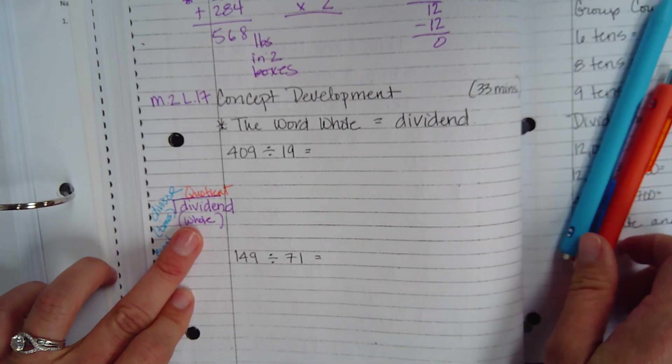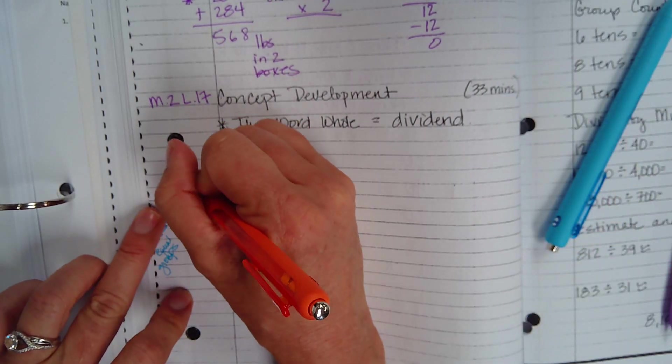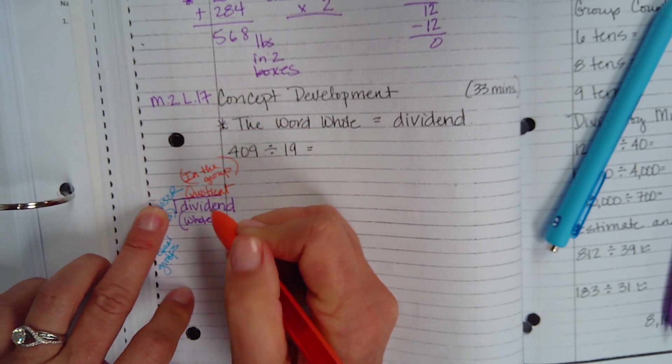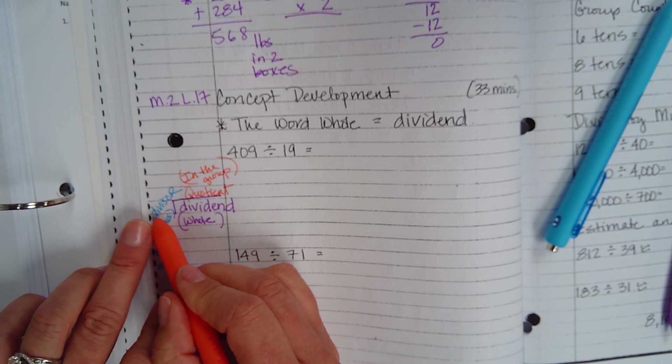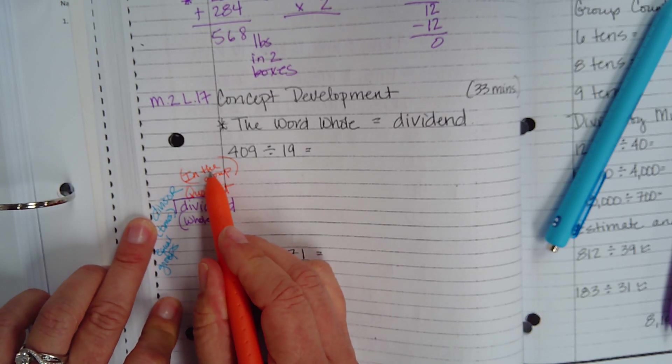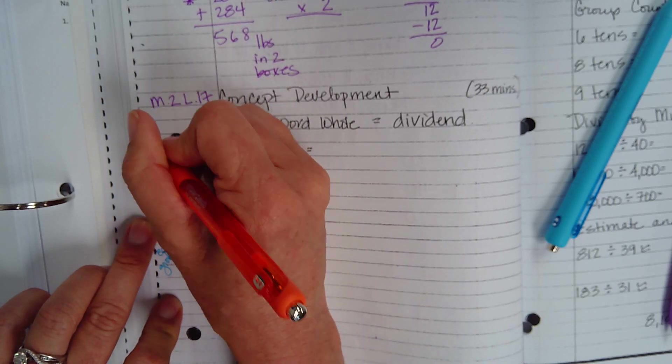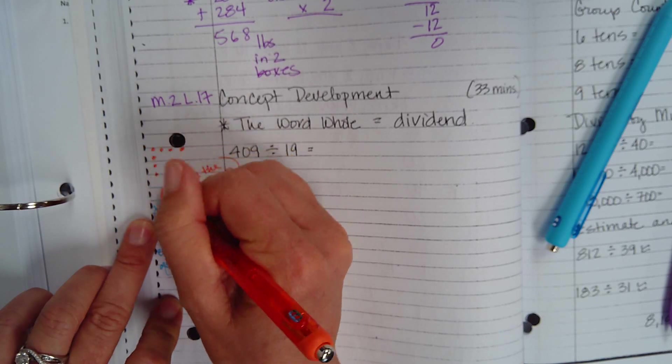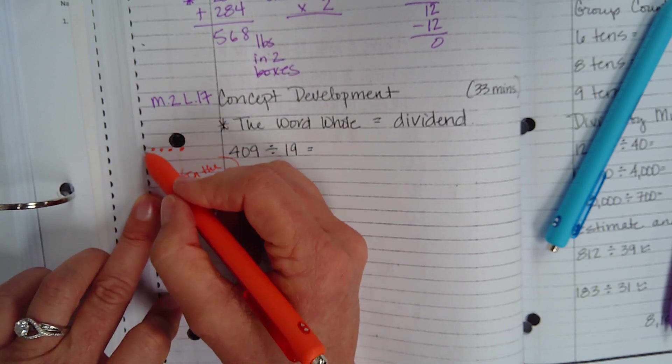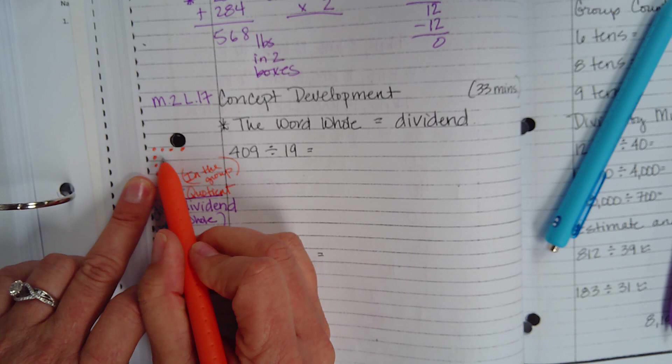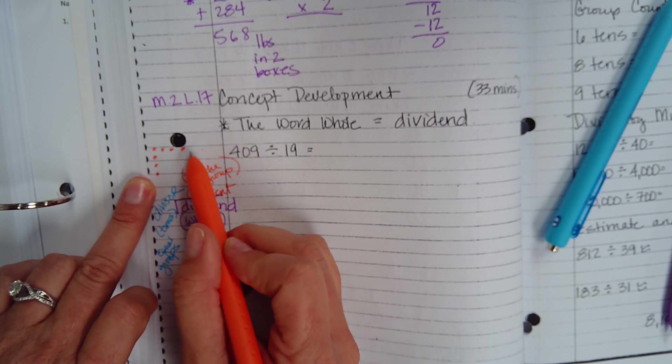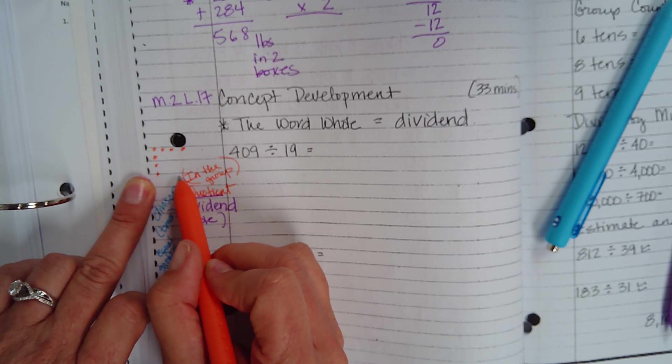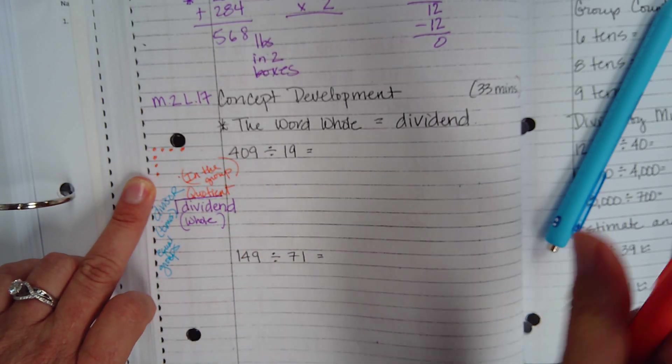And the quotient is how many are in the group? How many are in the group? If you have 10 groups, and there are this many inside the group. I was talking this morning, and it's like an array. It's like this is how many groups. This is how many are in the groups, right? This is the total whole, is in the middle, right? Yes or no?